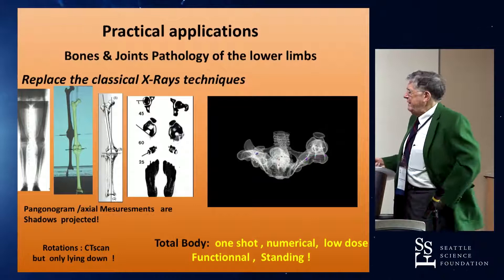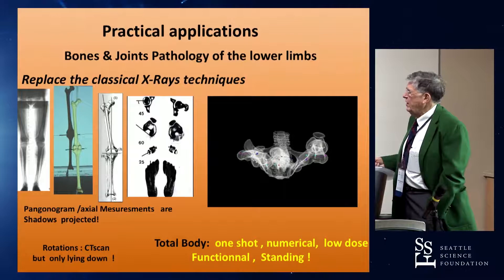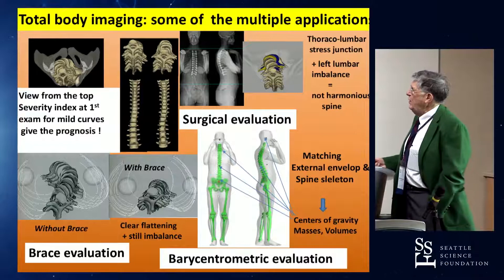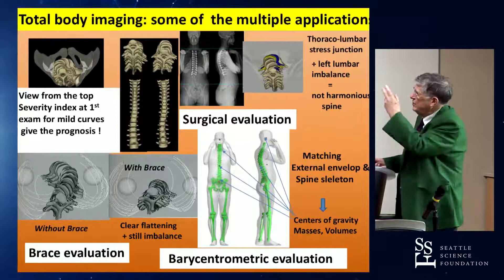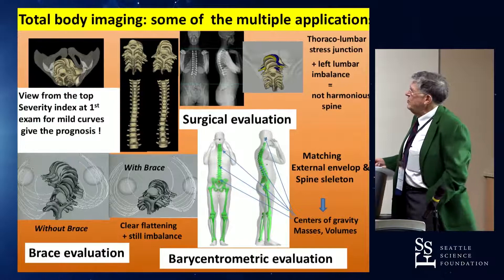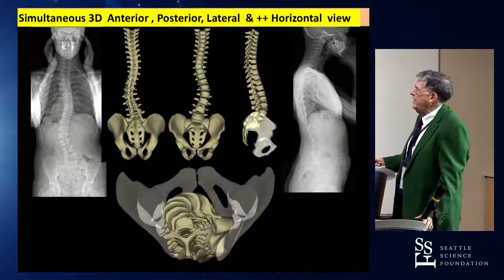With this device, we have the total body in one shot, very low dose, and we have the functional standing position. We can analyze lower limbs, but for the spine it is particularly interesting. Multiple applications, because this gives you the unique view from the top. With this view, we will determine the severity index to make a diagnosis very early. We can get the surgical evaluation — the important thing is not where the screws are placed, but the region of the spine that is not instrumented and is able to mobilize.